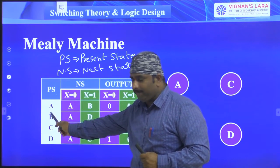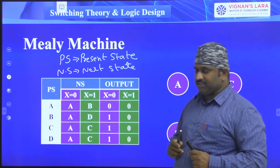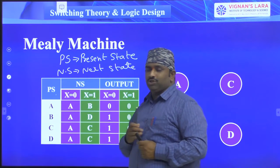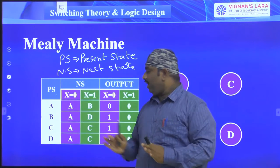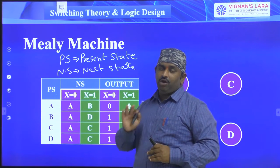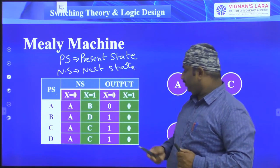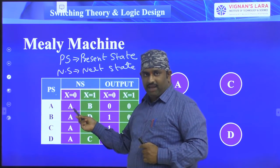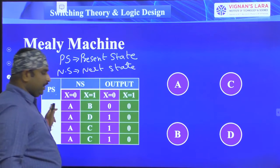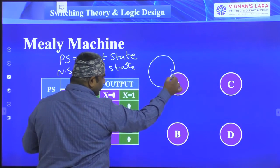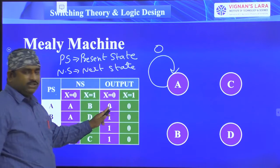If the present state is A and the input is zero, the next state is A and the output is zero. When input x=0, the next state is one type, and when input x=1 we have a different type of next state. Present state A, next state A, input=0, output=0. Since the next state is the same as the present state, we represent this as a self-loop arc labeled 0/0.